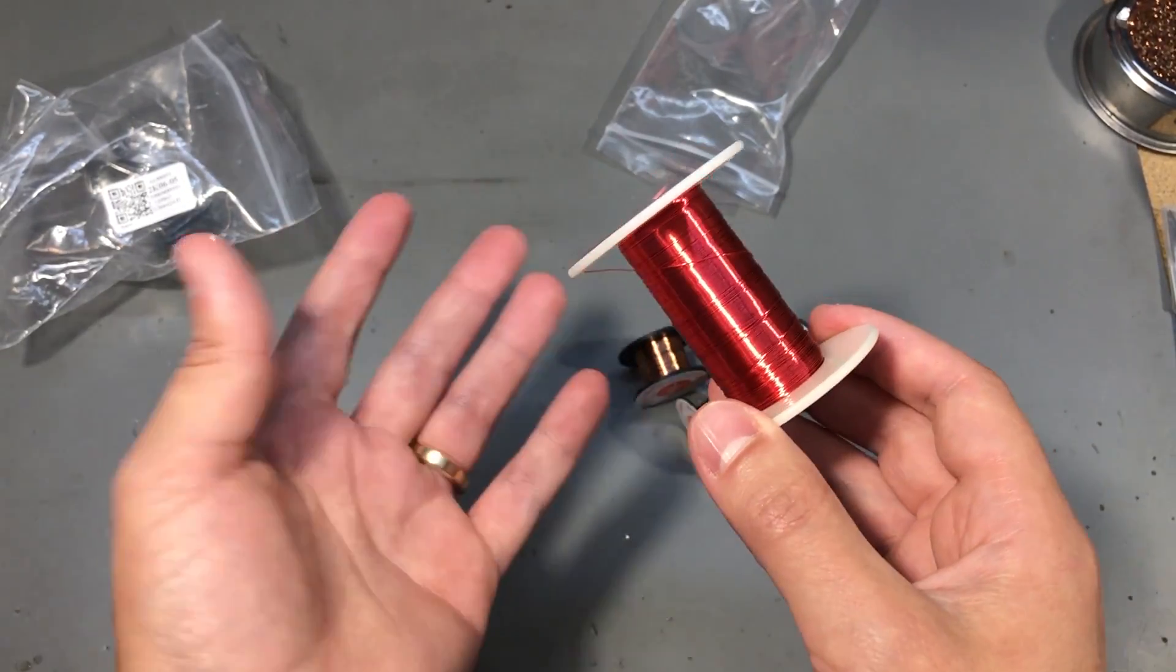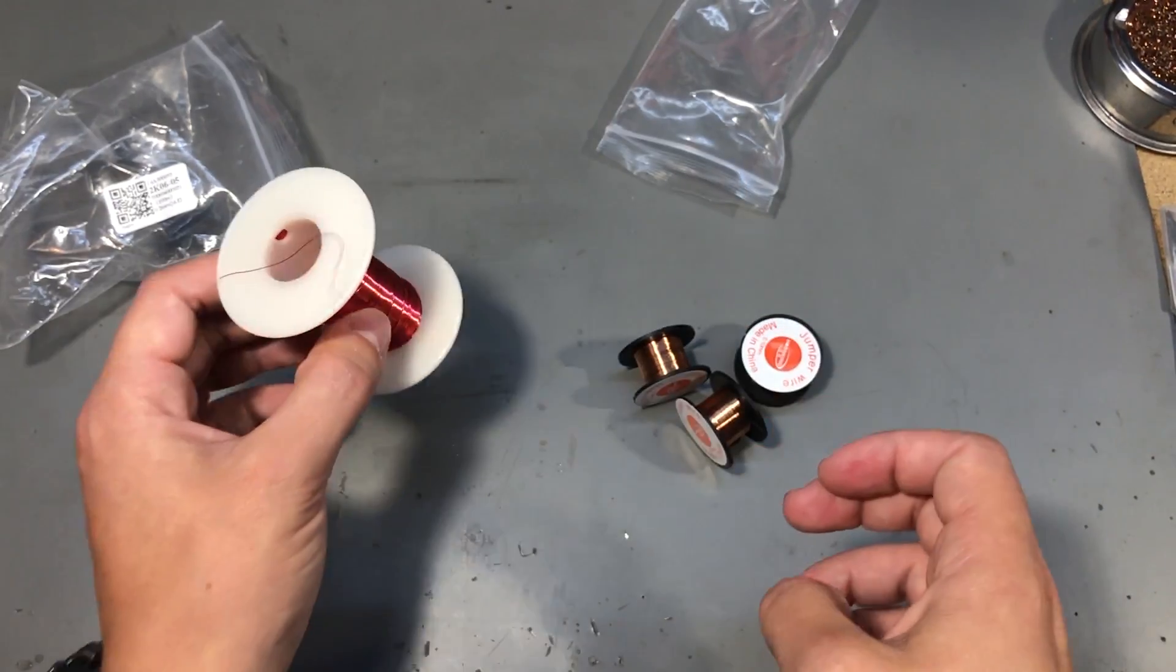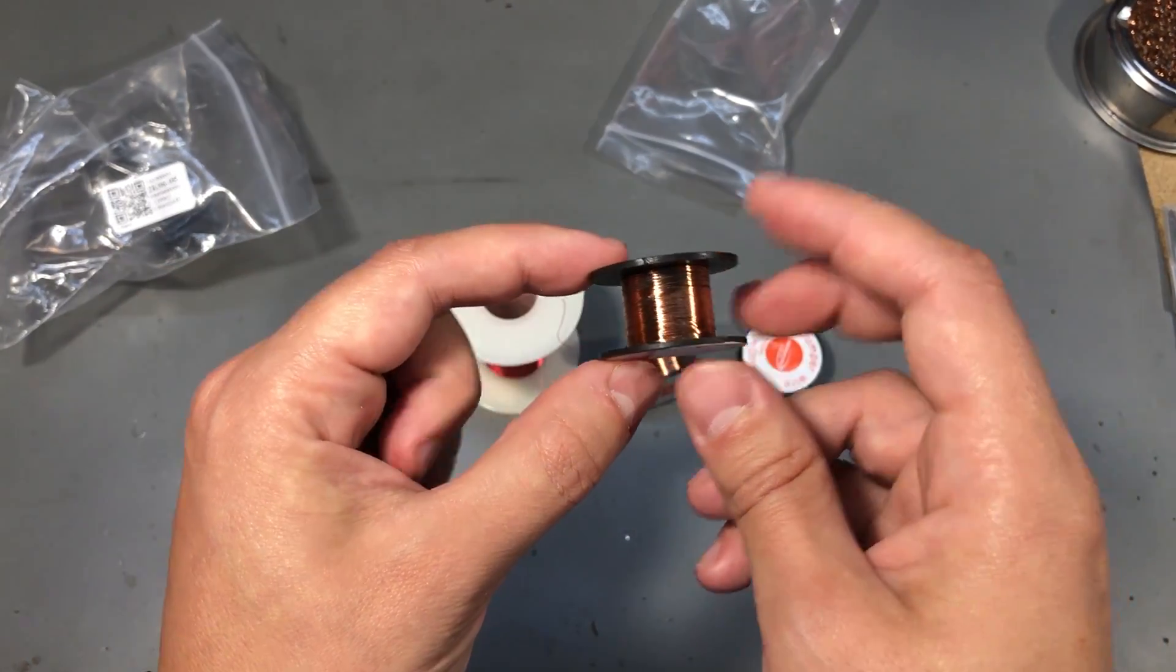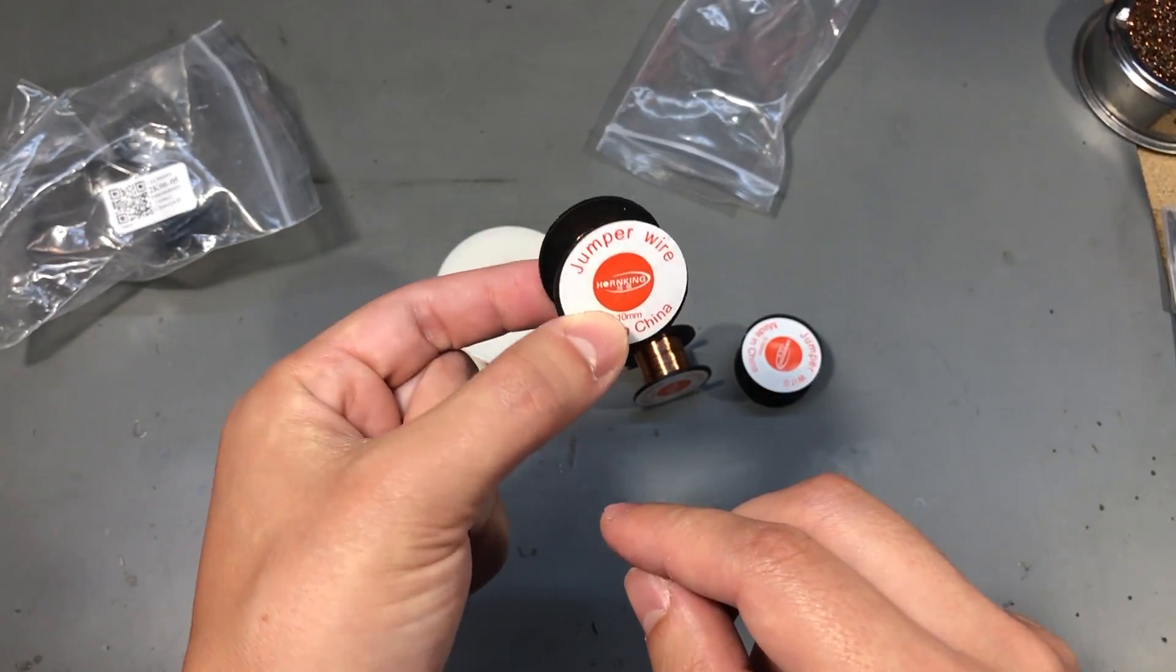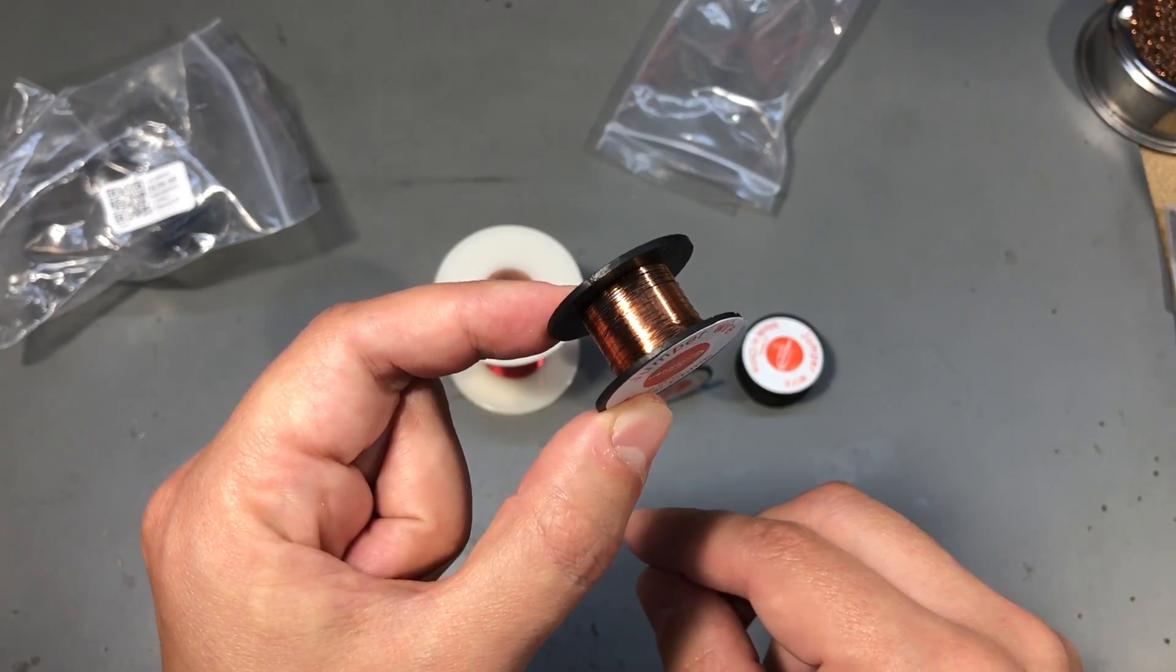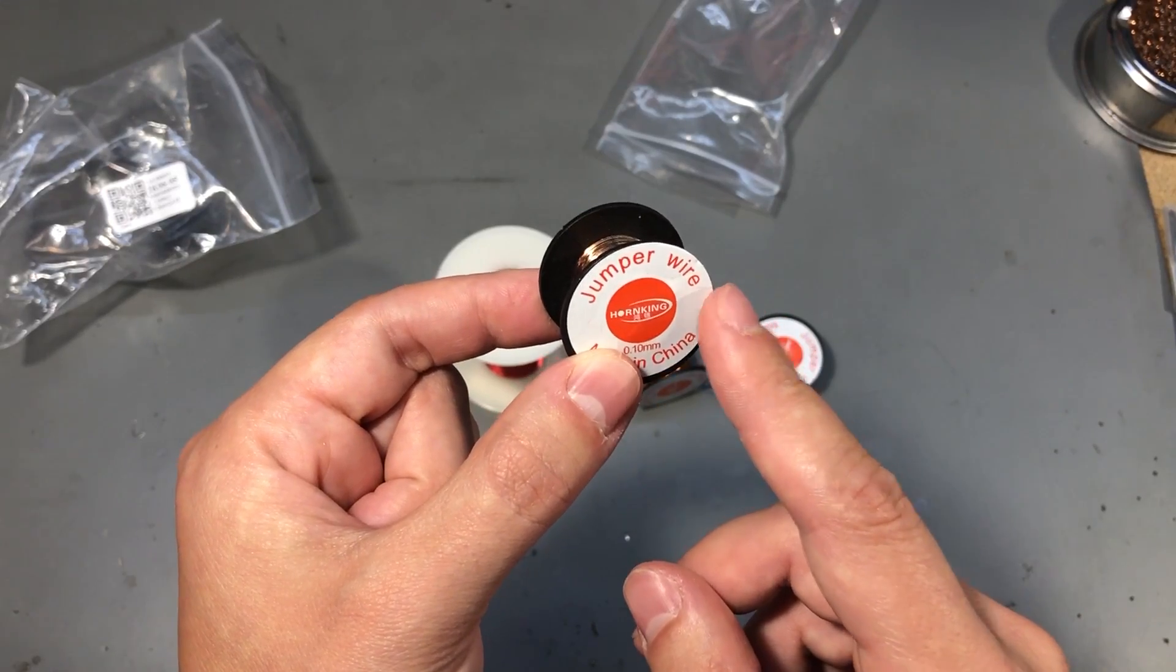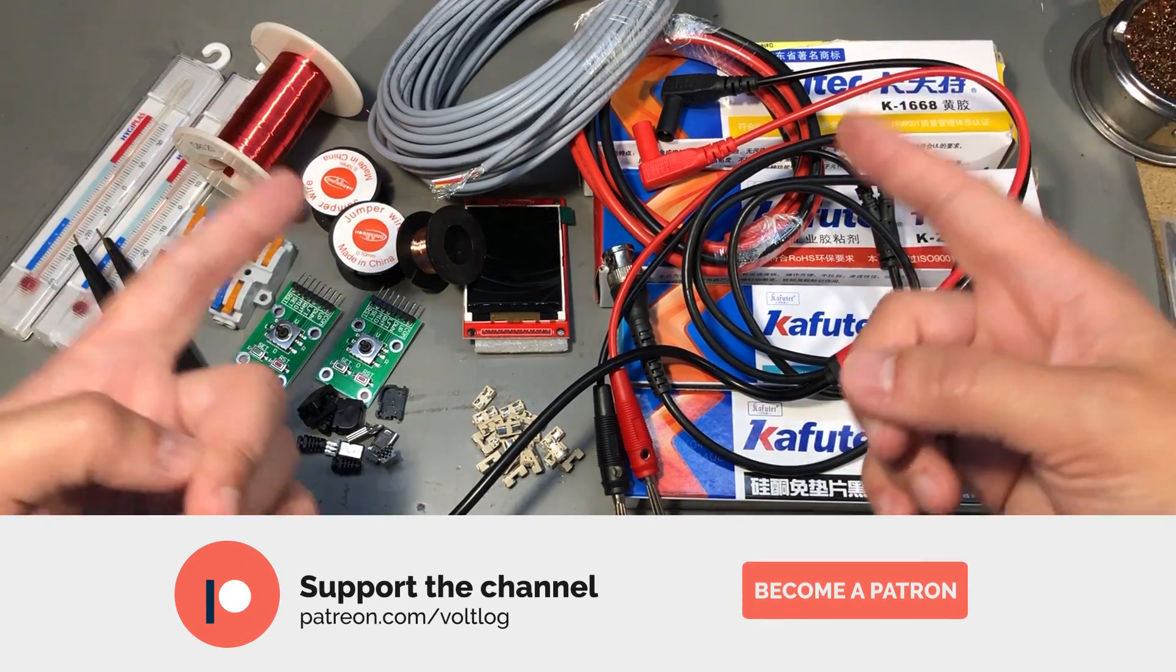I also got these smaller ones, these are 0.1 millimeter thick. I haven't tested these so far. They're a bit too thin for the kind of boards I am working on, but I guess it might make sense for those repairing smartphone motherboards for example where space is very limited and the component pads are even smaller.